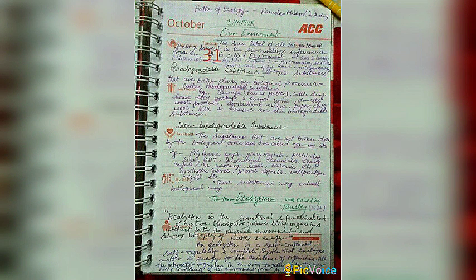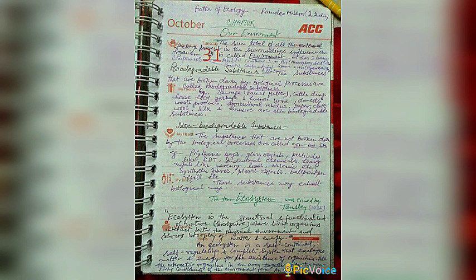Abiotic factors also include pH etc. Biotic components include animals and plants. Biodegradable substances are substances broken down by biological processes. Examples include sewage, fecal matter, cattle dung, household garbage, human urine, domestic waste, agricultural residue, paper, cloth, wool, silk, and manure.